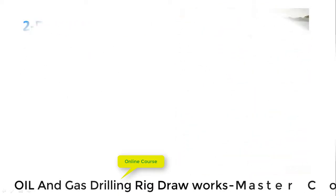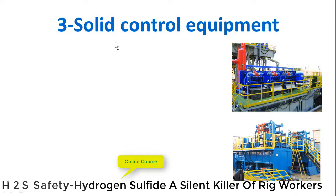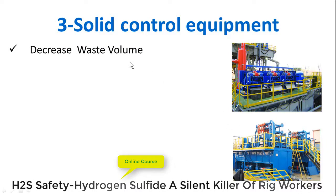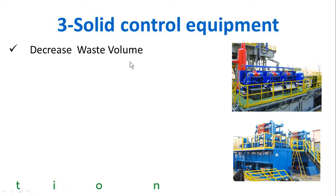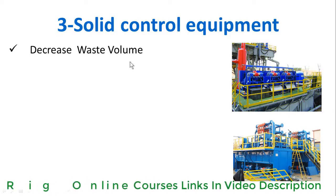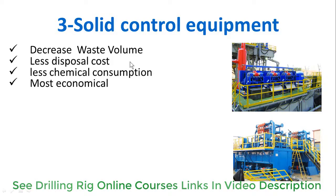The third technique uses solid control equipment such as the shale shaker, desander, desilter, and centrifuge. This technique decreases the waste volume as it removes the solid particles while returning most of the liquid phase back to the system.